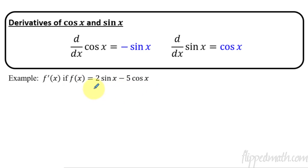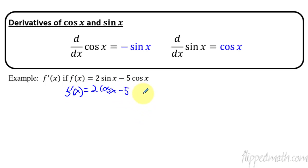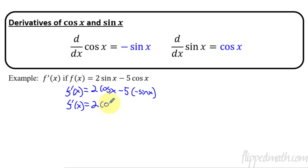So how do we take the derivative of this function? In this example, we take 2 down and then the derivative of sine is cosine x. So f prime of x equals 2 cosine x minus 5, and now we take the derivative of cosine, which is negative sine x. We simplify this up and get that f prime equals 2 cosine x plus 5 sine x, because of the minus and the negative. And that's it.